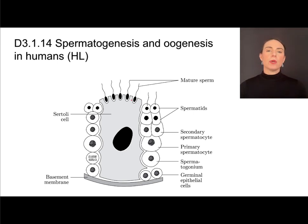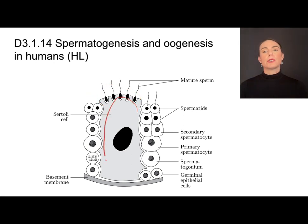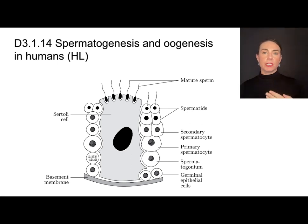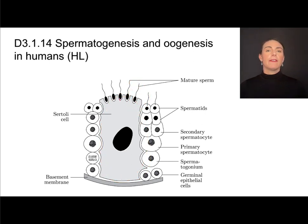While they are developing, they are going to attach to these giant cells called Sertoli cells. They're going to use this cell kind of like a nursery to gain nutrients as they are developing. It's not uncommon to find micrographs of cross sections of seminiferous tubules on exams, so be on the lookout for these giant Sertoli cells and the developing sperm attached to them. The tails will be extending in towards the center of the seminiferous tubule.